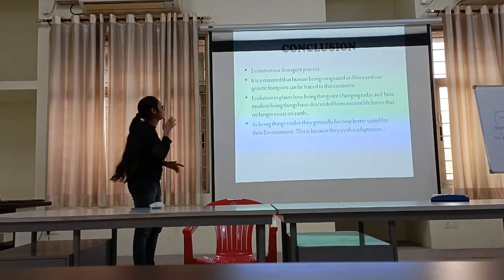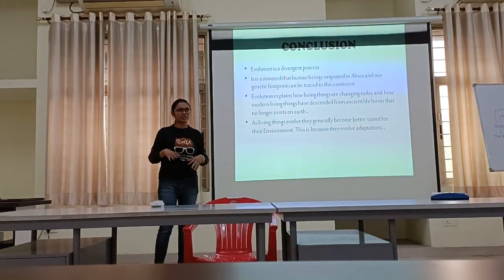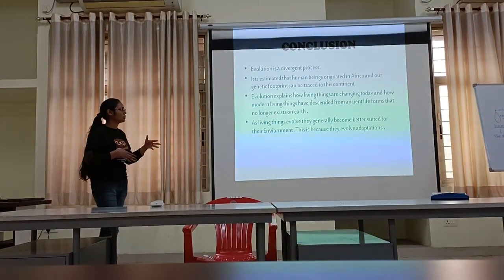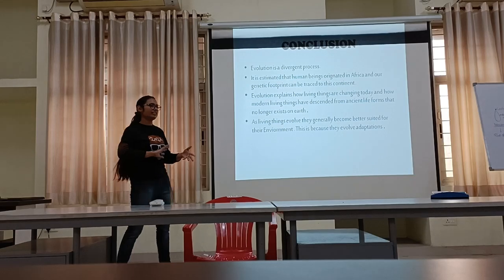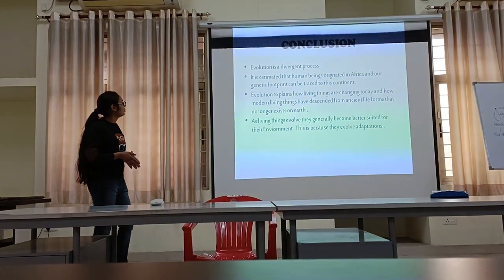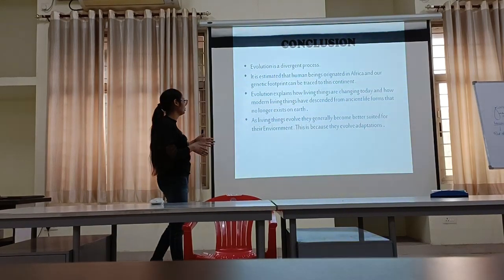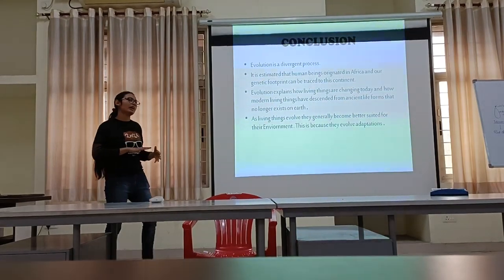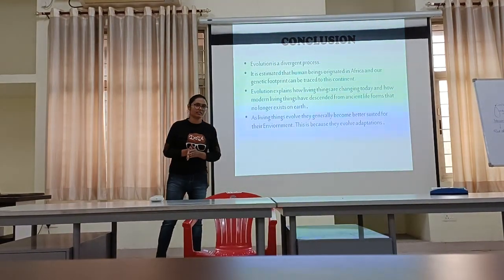In conclusion, evolution is a divergent process, because when species give rise to numerous species, it is estimated that human beings originated in Africa and then spread to other continents. For several needs, they adapted to several environments. Evolution explains how living things are changing today and how modern living things descended from ancient life that no longer exists on Earth. As living things evolve, they generally become better suited for the environment because they adapt certain types of adaptation to meet the needs of their environment.